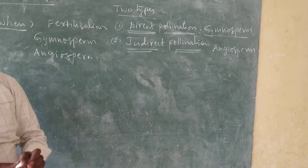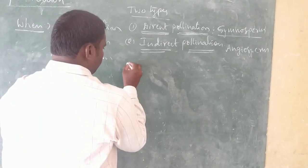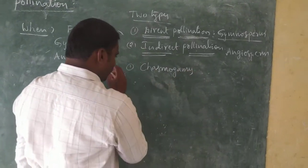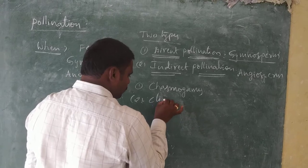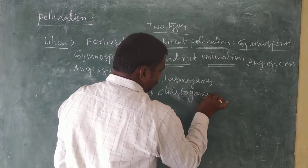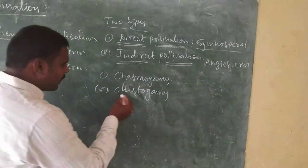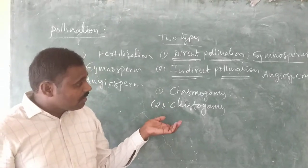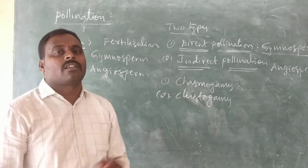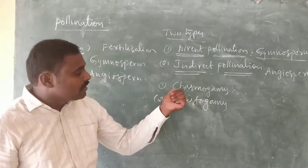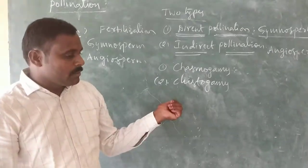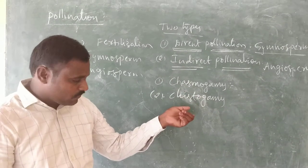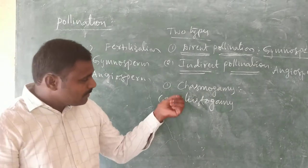We will now discuss two more terms: chasmogamy and cleistogamy. What is chasmogamy? The flowers which are open and their reproductive organs are exposed — those flowers are called chasmogamous flowers, and the pollination in them is called chasmogamy. The majority of flowers bloom and open their calyx and corolla, exposing the sex organs like androecium and gynoecium. Hence those flowers are called chasmogamous flowers and the pollination in them is called chasmogamy.